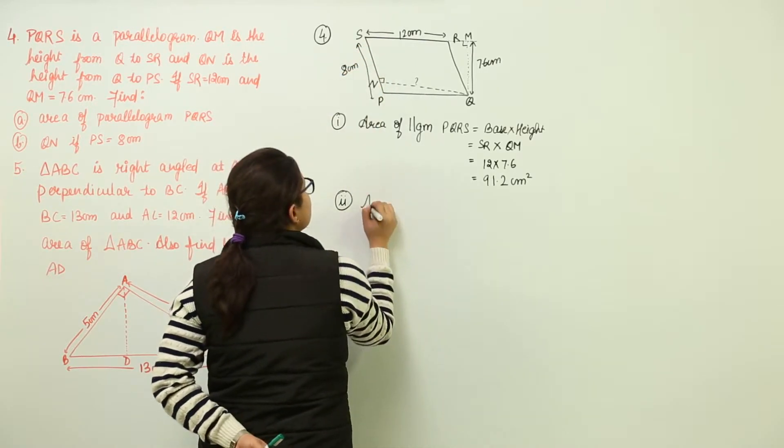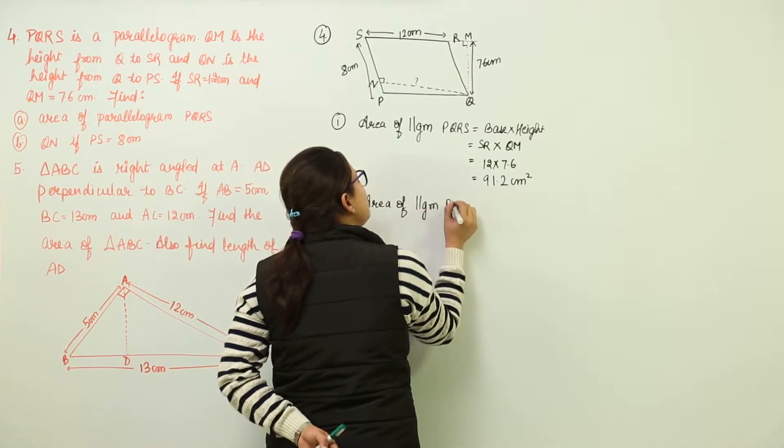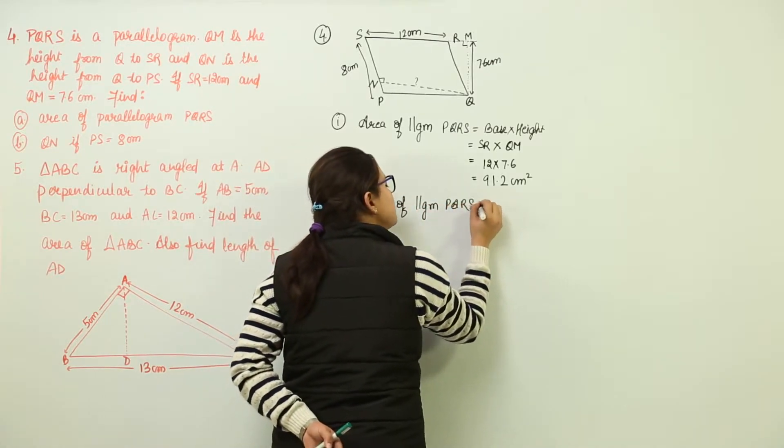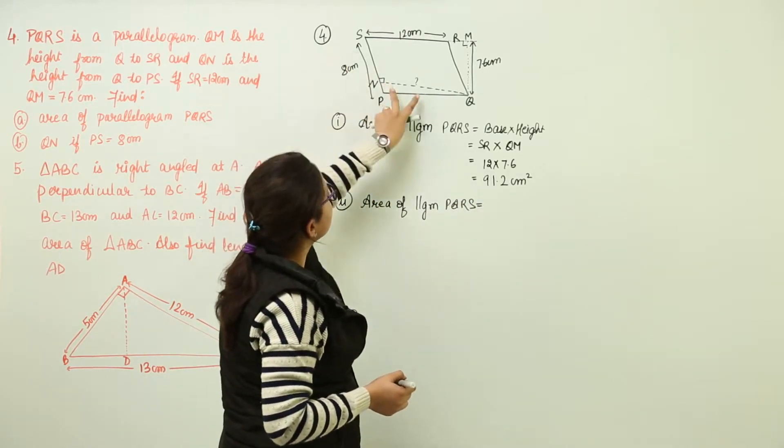So we will write over here that the area of parallelogram PQRS can also be written for the base as PS and height as QN.